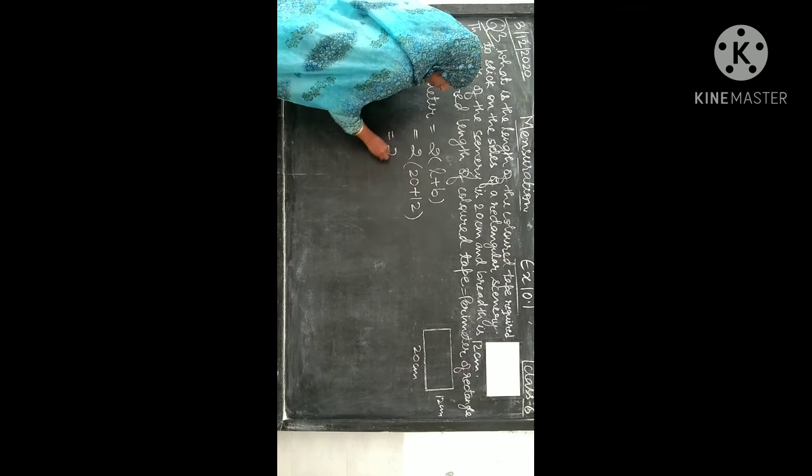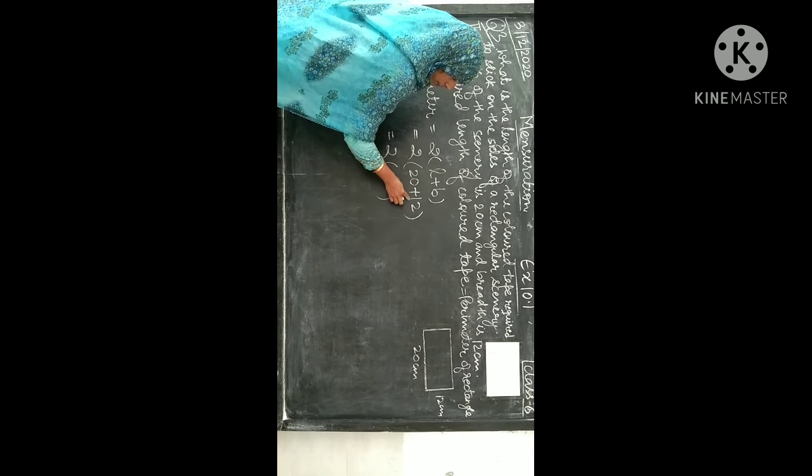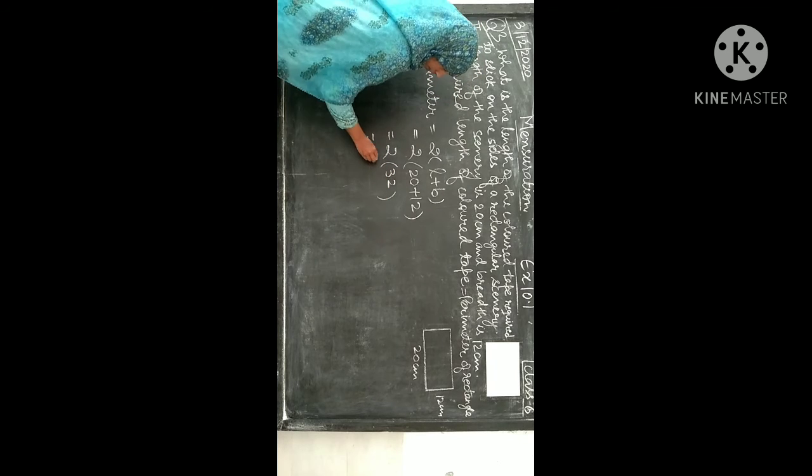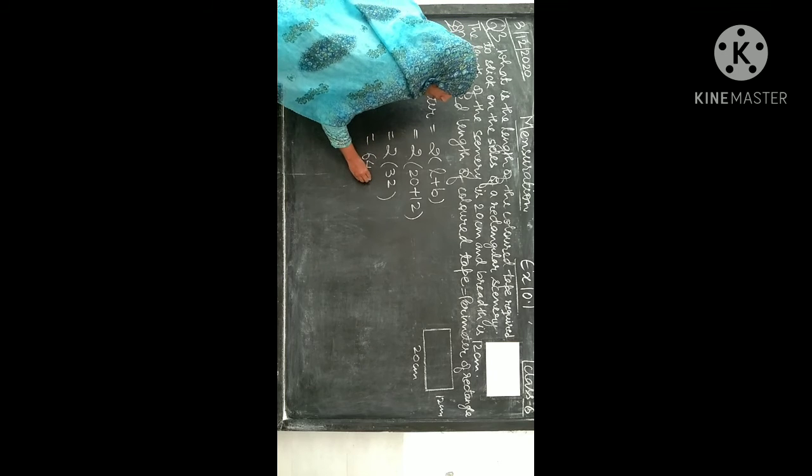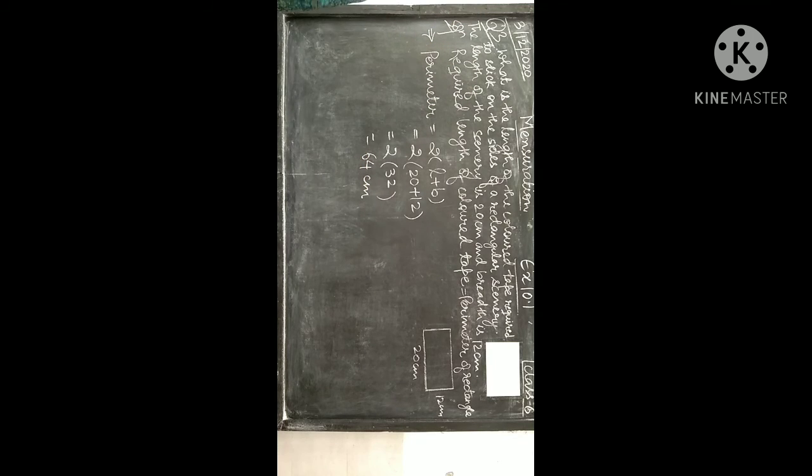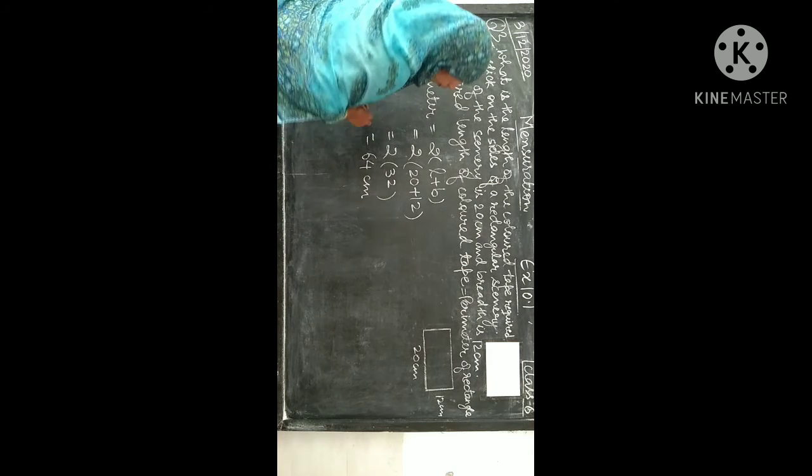So 20 plus 12 is 32. 2 into 32 is 64 cm. Right? Aap ko jo tape chahiye, us tape ki jo length hai, wo 64 cm.